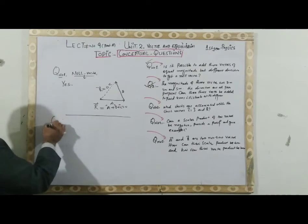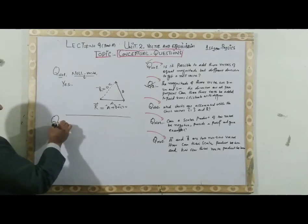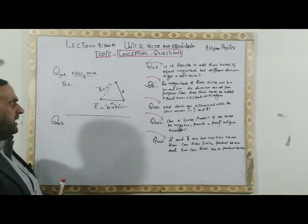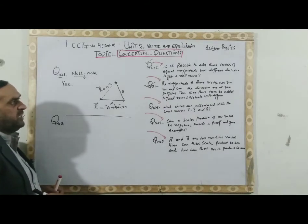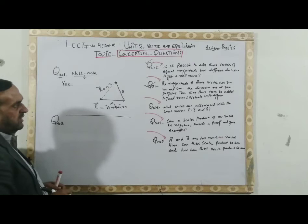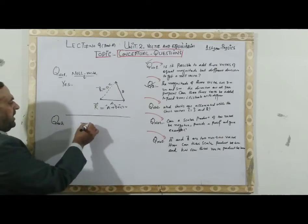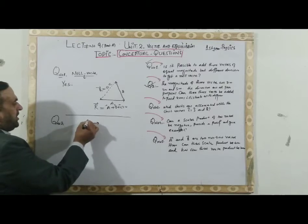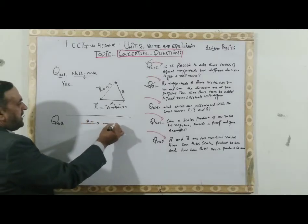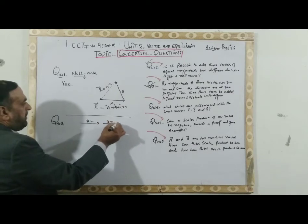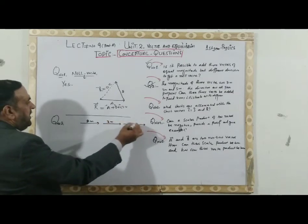Now question number 2. The answer we have discussed is that the magnitude of three vectors is 2 meters, 3 meters, and 5 meters. Here we have three vectors: this one is 2 meters, this one is 3 meters, and this one is 5 meters.